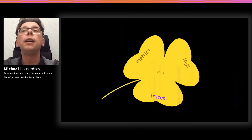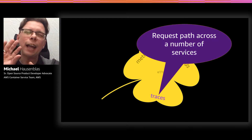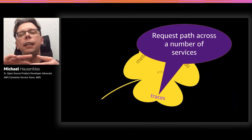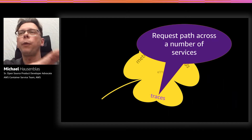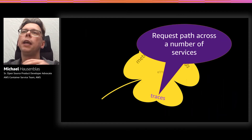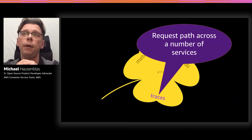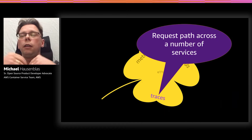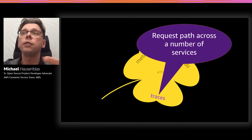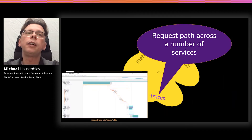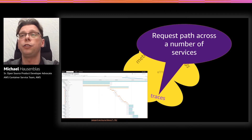Last but not least, we have traces. Traces are kind of like logs, but in context. Think of a request coming in — typically in a microservices environment — where many different microservices touch that request. That's what the request path is about. If you take all these things together along a request path across certain services, you have a trace and you can see what's going on across your distributed system. Here is a screenshot of the Jaeger UI, one of the many ways to consume a distributed trace.